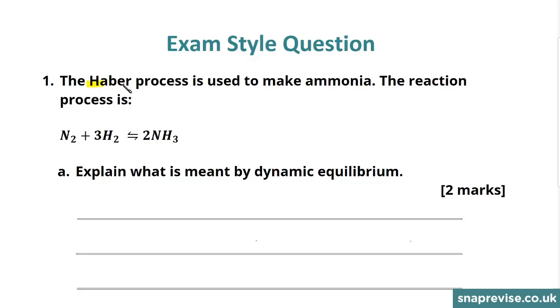The question tells us that the Haber process is used to make ammonia, and it then gives us an expression for what happens in the reaction, which is that one diatomic molecule of nitrogen reacts with three diatomic molecules of hydrogen in order to produce two molecules of ammonia.